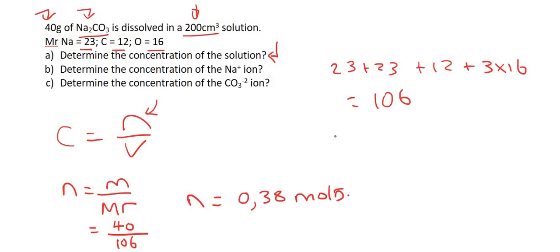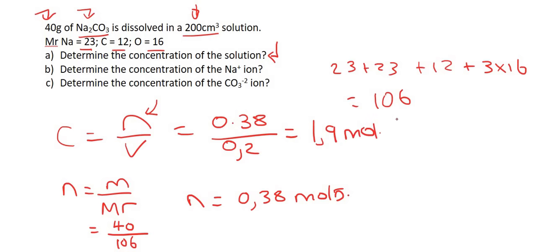Using C = n/V: moles = 0.38, volume = 200 cm³ ÷ 1000 = 0.2 dm³. Working this out gives a concentration of 1.9 mol·dm⁻³. So the concentration of our Na₂CO₃ solution is 1.9.